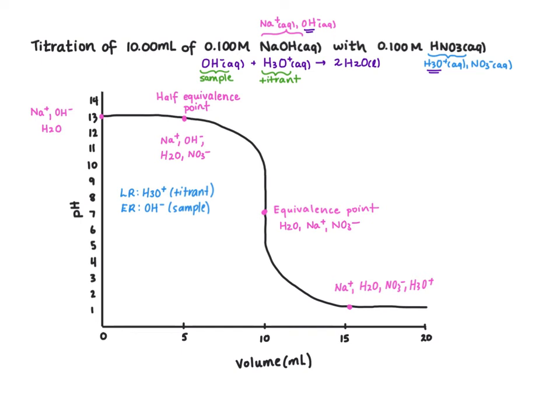And after the equivalence point, the limiting reagent becomes our sample. So the hydroxide is our limiting reagent, and our excess reagent is our titrant.